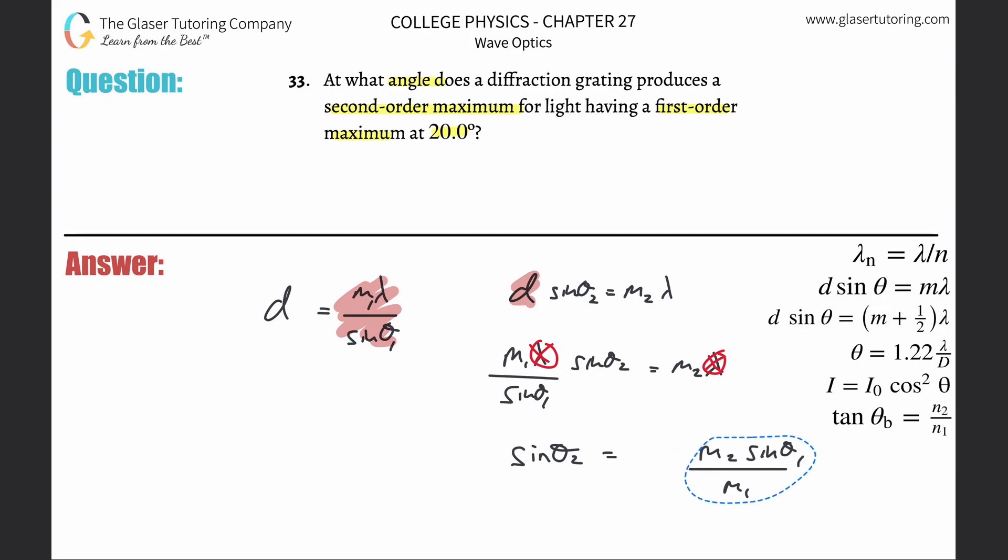Since I need to find theta and not sine of theta, I'm going to take the inverse sine of both sides. What that will do is cancel the sine on the left. We've seen this now 31 times, and here we go.